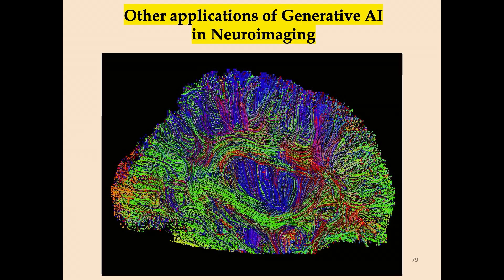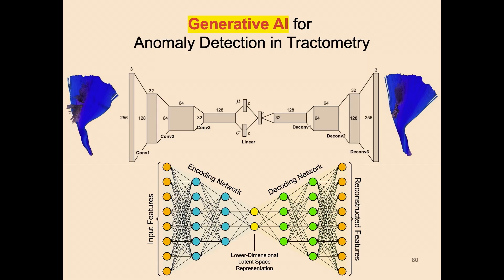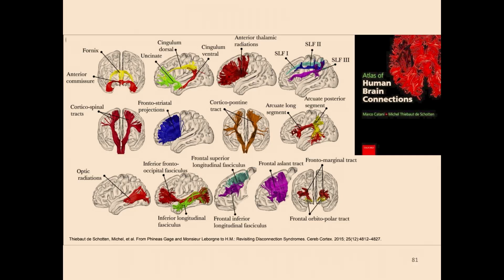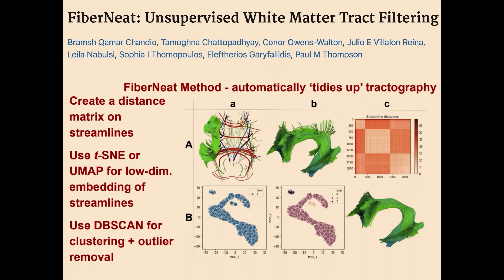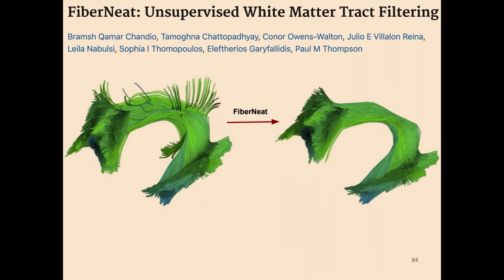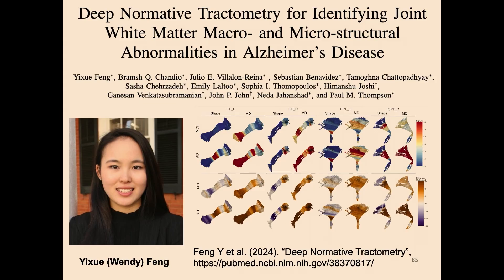You can apply this beyond T1 — you can put tracts in, do diffusion tractometry. When you run tractometry normally, they look like spaghetti. A variational encoder can be used to QC your data, as compressive techniques like VAEs get rid of outliers very well. This is work by Bram Shandio in our group: many methods are tidying up tractography by using autoencoders to eliminate spurious streamlines. They seem to work really well. This is 'deep normative tractometry for identifying joint white matter macro and microstructural anomalies' — work by Wendy Fang — where you feed the whole connectome into a VAE.